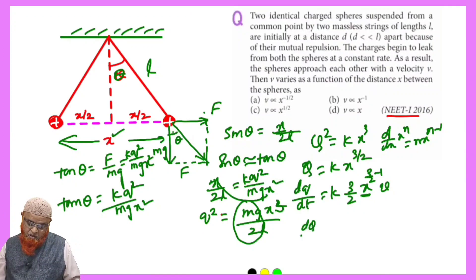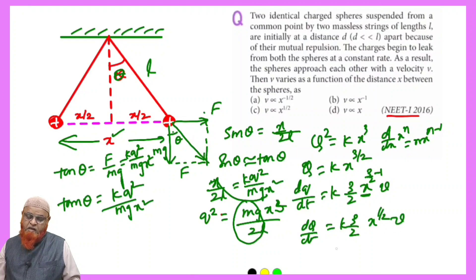Now dq/dt is equal to k times 3/2 x^(1/2) into v. So with this it is understood that v is directly proportional to x^(1/2).